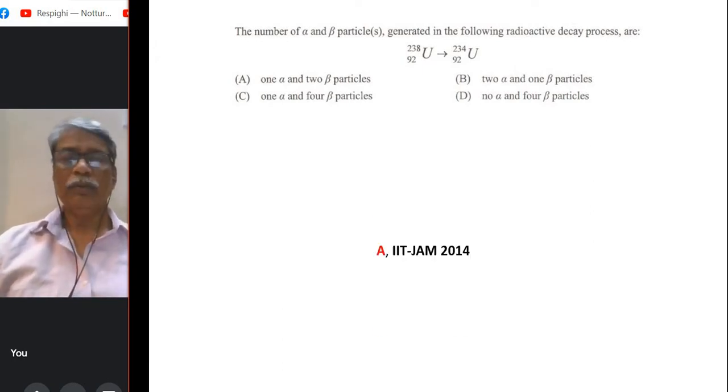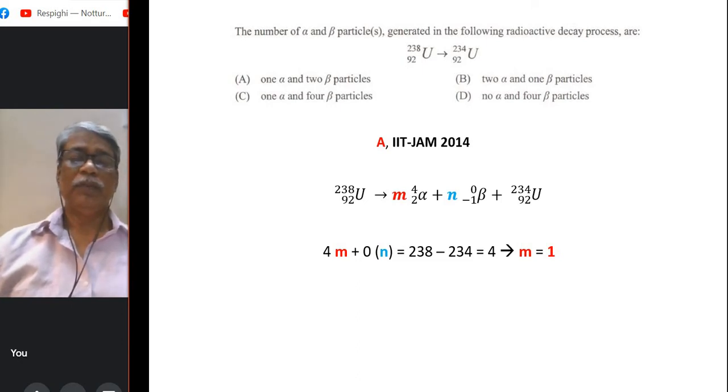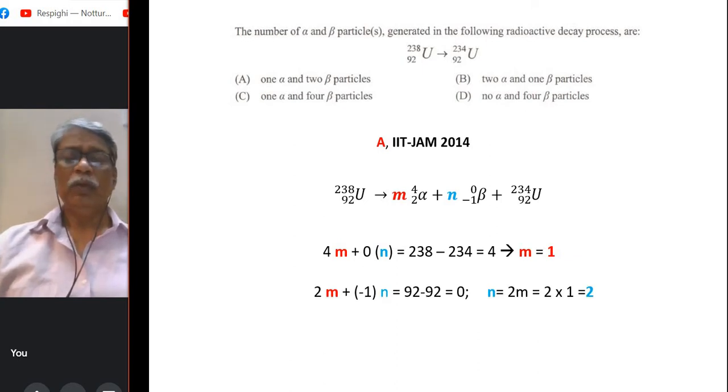So, this kind of question, how you usually solve, we go for charge and mass balance. So you naturally get two equations, supposing m number of alpha and n number of beta. It is very simple, that gives you the first equation to balance the mass: 4m + 0n = 4, so m = 1 and 2m - n = 0, because on both left and right it is 92. So n is 2m or 2. So we get 1 alpha and 2 beta. So option A is the right.